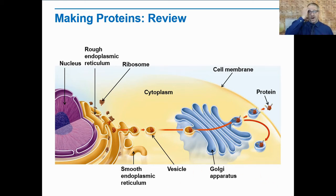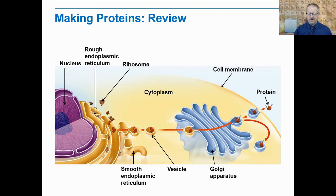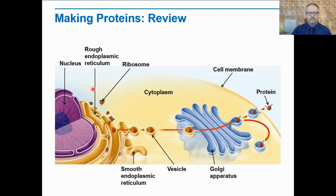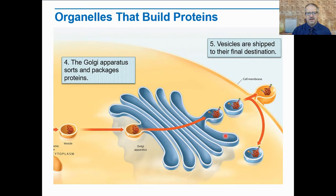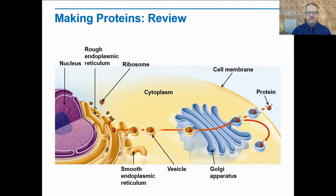Something you might want to do for your own benefit is create a flow chart and summarize the role of each of the following cellular structures in protein synthesis: the nucleus, nuclear envelope, ribosomes, endoplasmic reticulum, Golgi apparatus, vesicles, vacuole, and cell membrane. By the way, we didn't say much about vacuoles, but they're very similar to vesicles.